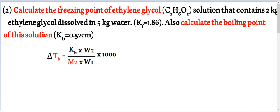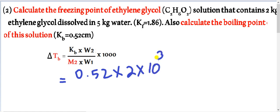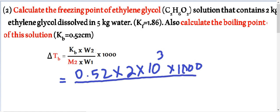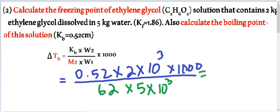Now we find boiling point elevation. KB given is 0.52. Weight of solute is 2 kg (converted: 2 times 10 cubed), divided by molecular weight 62, into 5 kg of water (converted). We get the answer Del Tb equals 3.355 degrees centigrade.